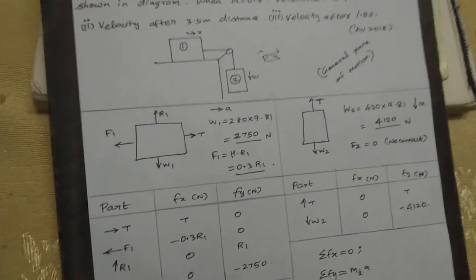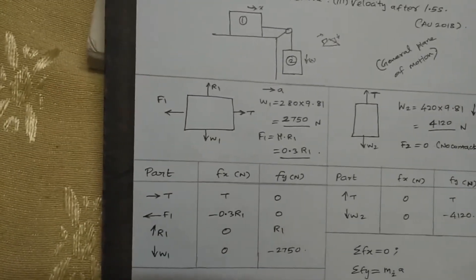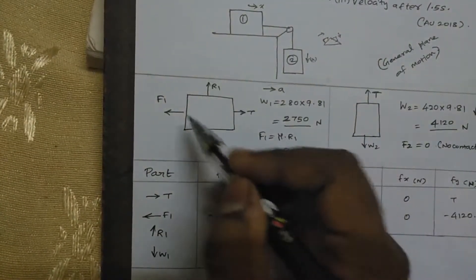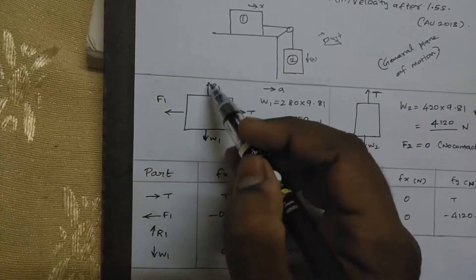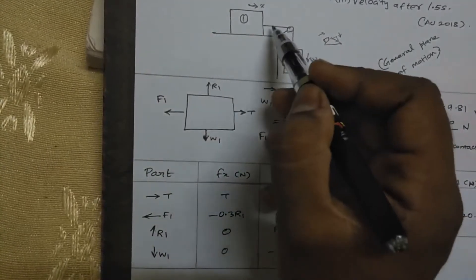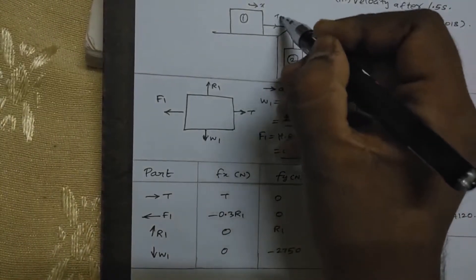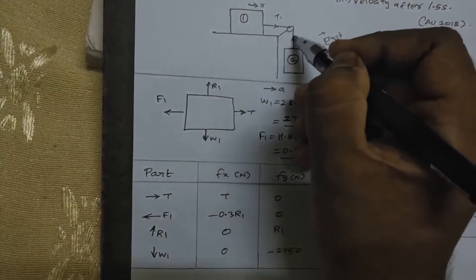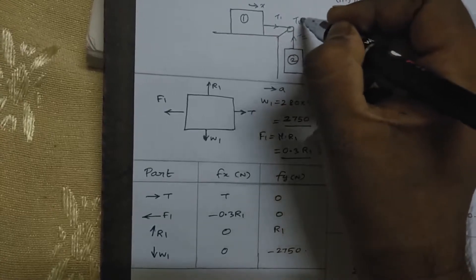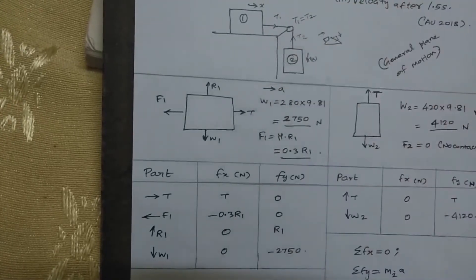Regarding the first block: the weight is going down, reaction is going up. This is your T1 and this is your T2. Actually, T1 will be equal to T2.